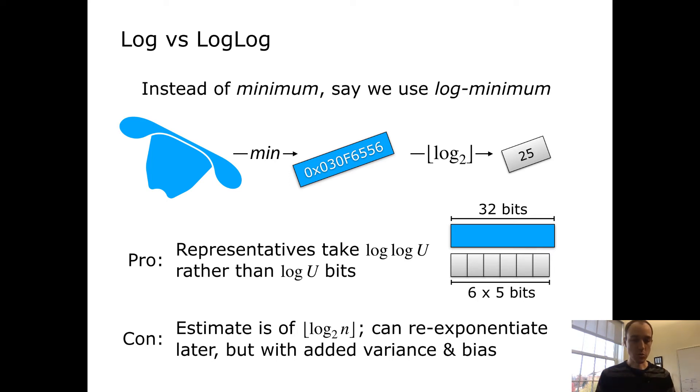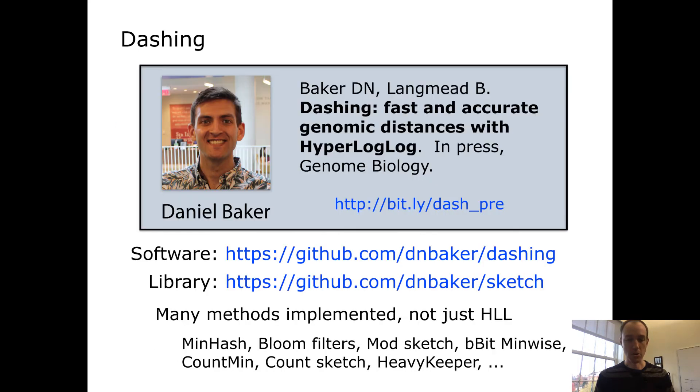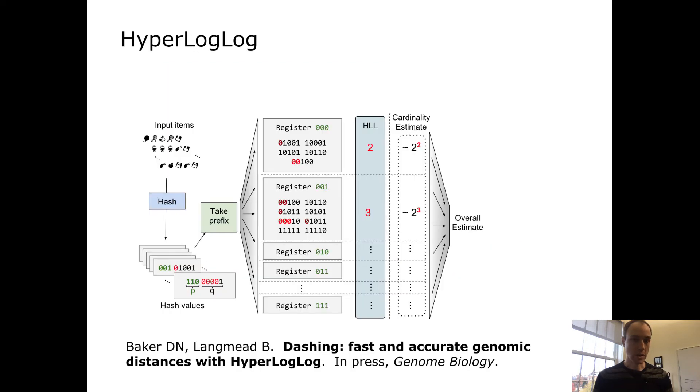Now I'm ready to introduce our software tool, which is called Dashing, and it's based on something called the HyperLogLog sketch. This is the work of PhD student Daniel Baker, who's just an exceptionally skilled programmer, who's done a great job building a fast and usable software tool, but who's also done a lot of work to create libraries around the sketches that are implemented in Dashing. So if you're a developer, if you're interested in these methods, you would likely benefit from checking out both the tool and the libraries that Daniel's made available.